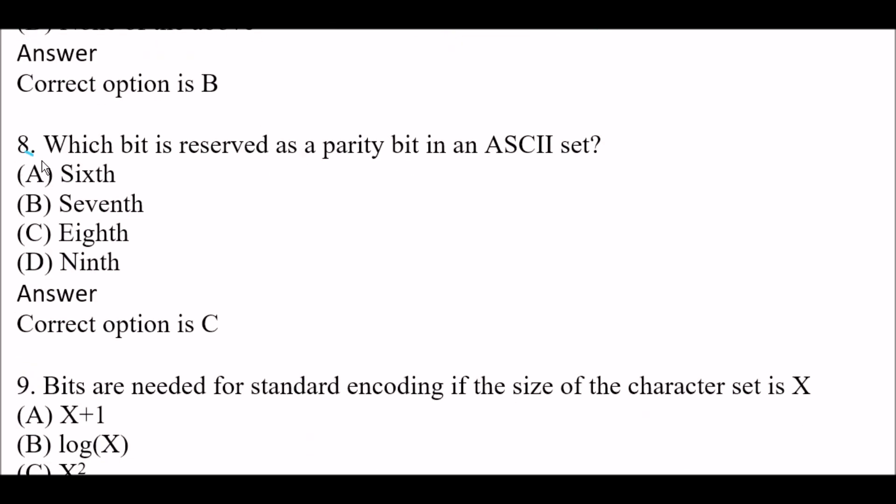Next question: Which bit is reserved as a parity bit in an ASCII set? Option A: 6. Option B: 7th bit. Option C: 8th bit. Option D: 9th bit. The right answer is Option C, the 8th bit. The 8th bit is reserved as a parity bit in the ASCII set.